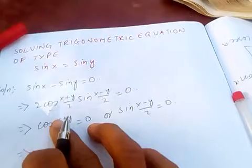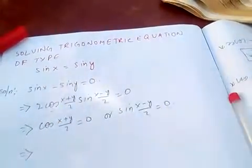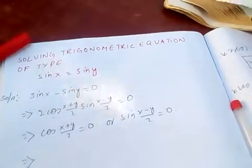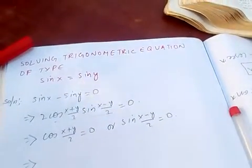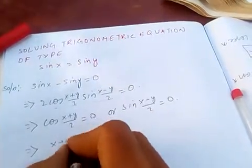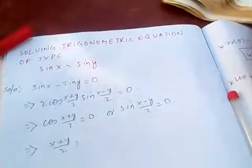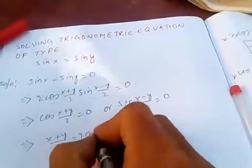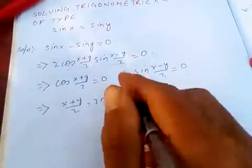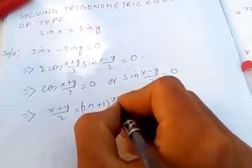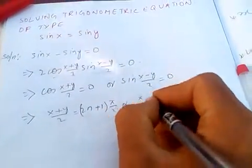We know that cos x equals 0 when x equals (2n+1)π/2. So for cos((x+y)/2) equals 0, we have (x+y)/2 equals (2n+1)π/2.